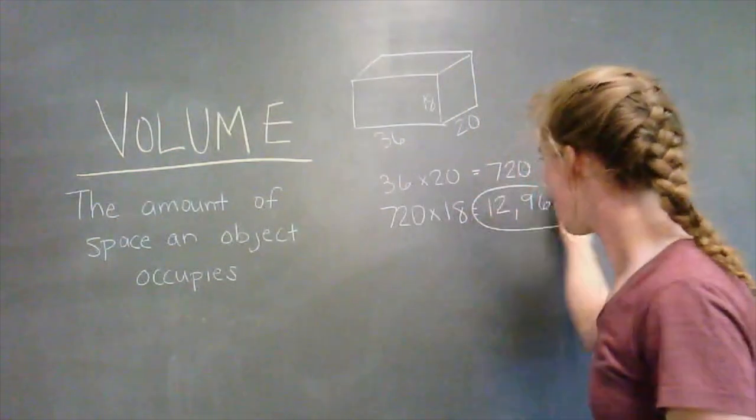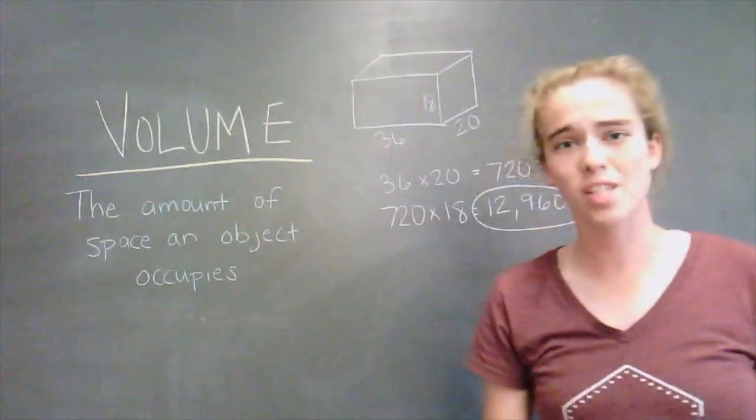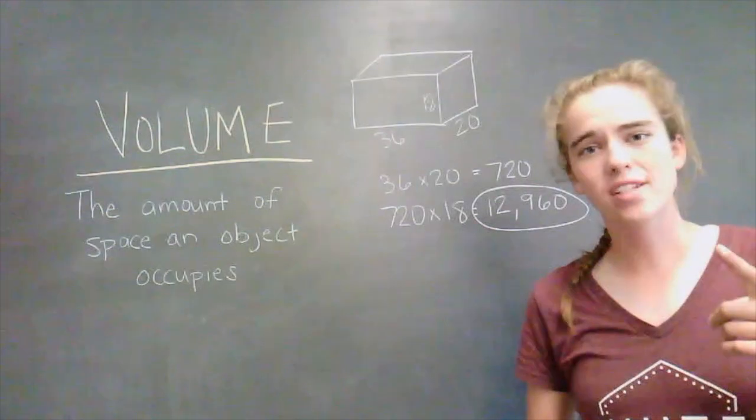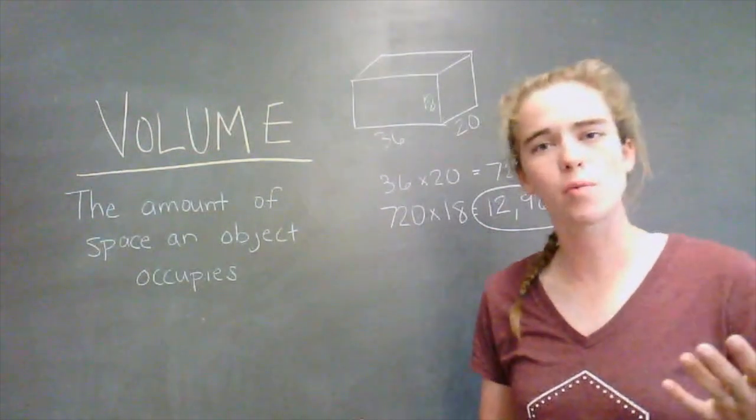So it turns out that there would be 12,960 cubes in this box if we filled it all the way. We can do this even faster using only one step, and that's our equation for the volume of a rectangular prism.